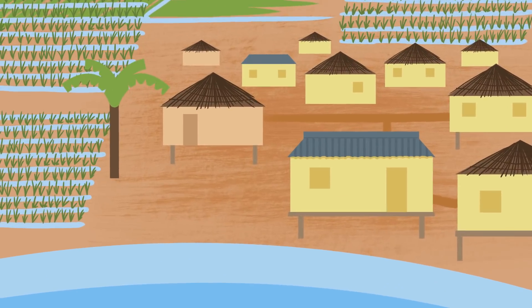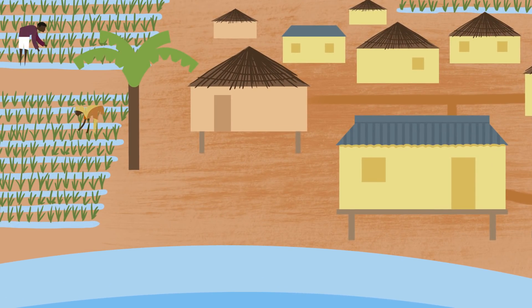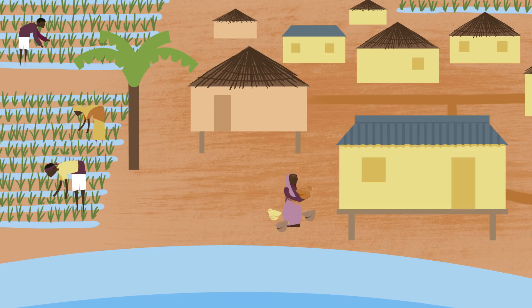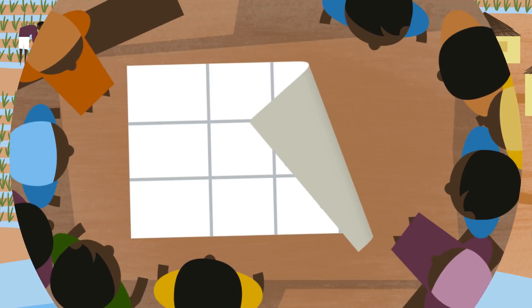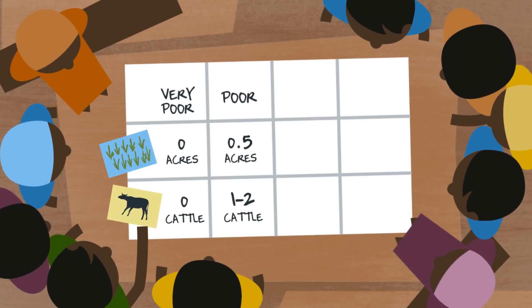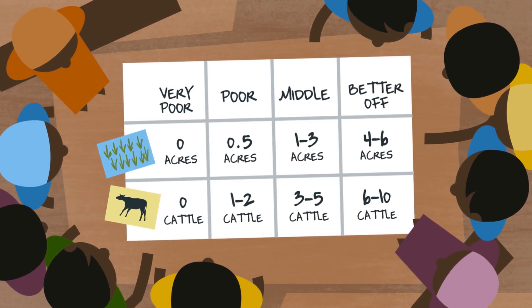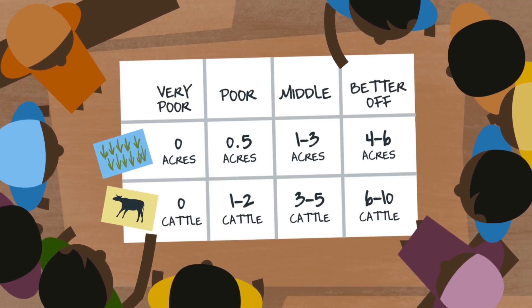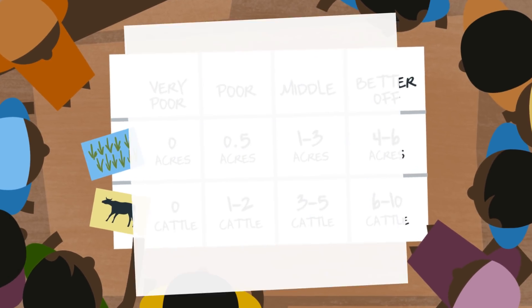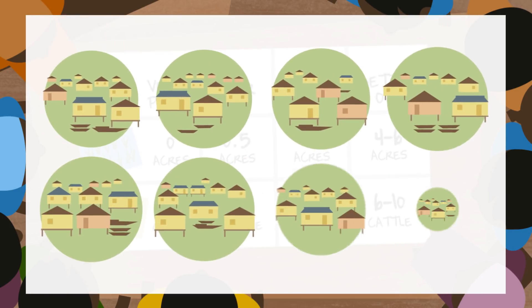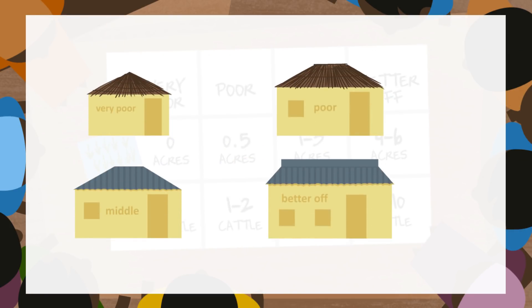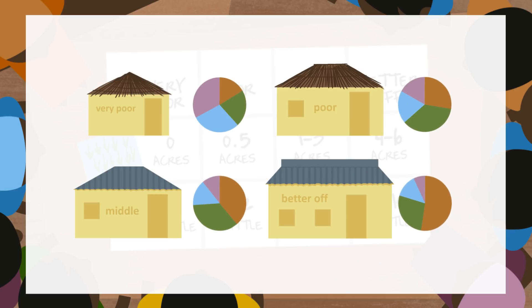Let's look at the riverine livelihood zone. Households here depend on farming rice and vegetables, raising livestock and working as labourers. Within each village, households differ in wealth and social status. So the next step in HEA is to work with community leaders to divide households into separate groups, ranging from very poor to better off. We then interview representatives from each wealth group in at least eight villages to produce a full economic picture for a typical household in each wealth group.